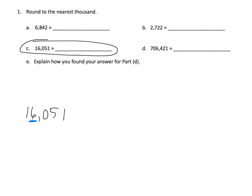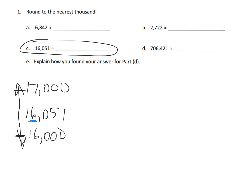We're not exactly going to create a number line — we're going to briefly simulate one. The bottom of the number line would be 16,000 and the top would be 17,000. We need to decide: is 16,051 closer to 16,000 or closer to 17,000? Students should recognize that 16,051 is closer to 16,000, so it rounds down to 16,000.